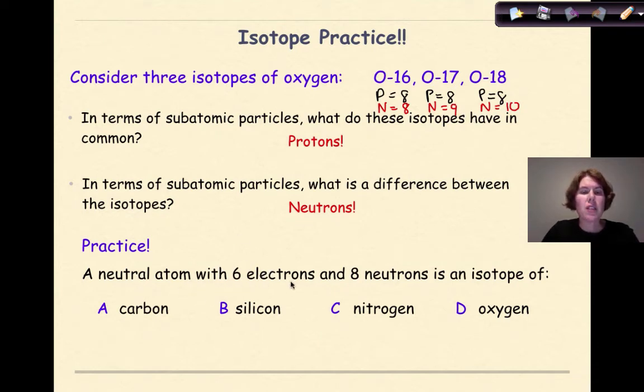Let's look at this final example. A neutral atom with 6 electrons and 8 neutrons is an isotope of what element? A neutral atom tells me that protons has to equal electrons. So if I have 6 electrons, that means I have 6 protons. And if I have 6 protons, that's equal to my atomic number.